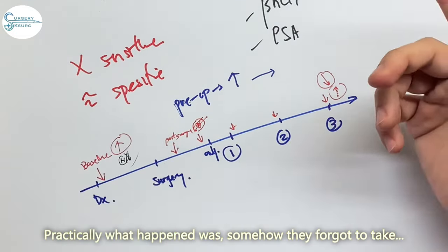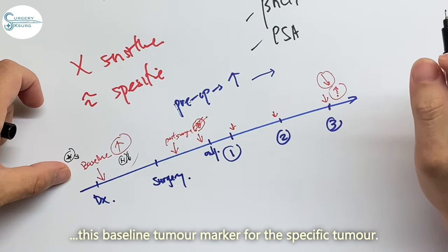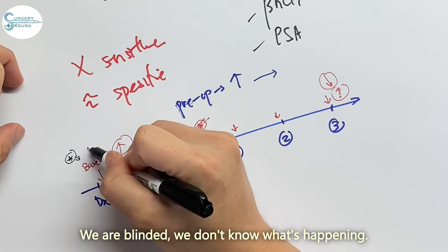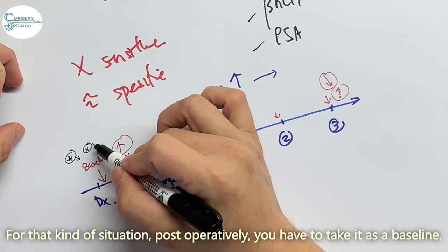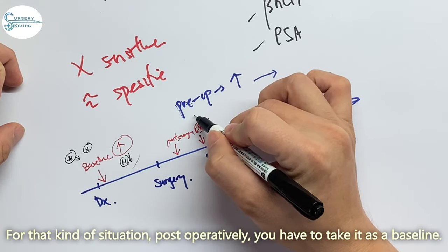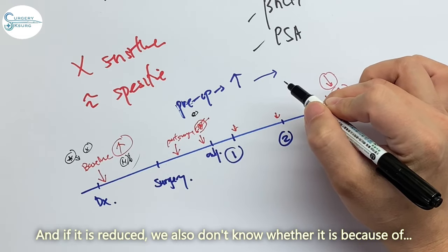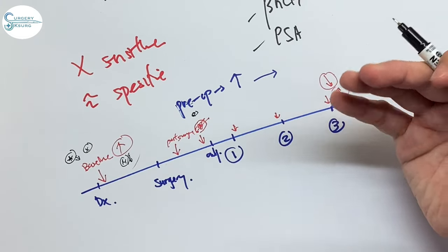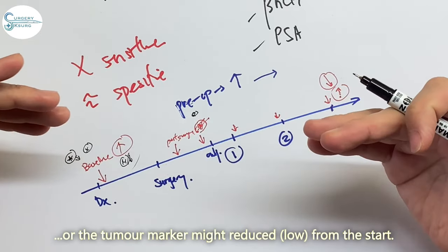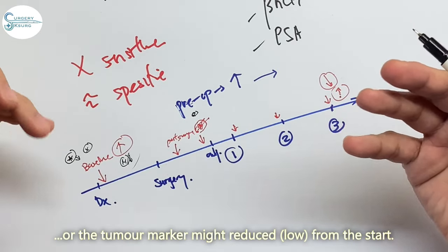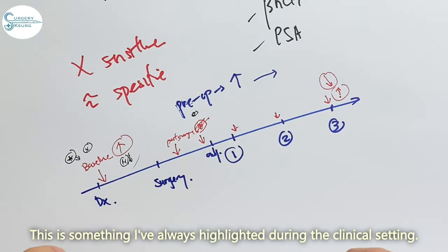So practically what happened was somehow they forgot to take this baseline tumor marker for the specific tumor. We are blinded. We don't know what's happening. So for that kind of situation, postoperatively you have to take it like a baseline. And if it is reduced, we also don't know is it because of the definitive surgery that's causing the tumor marker to be reduced or the tumor marker might have reduced from the start. This is something I always highlight during the clinical setting.